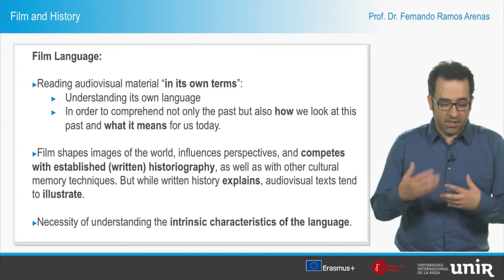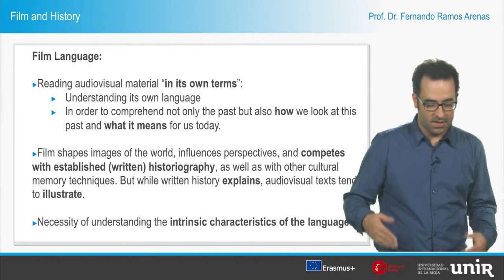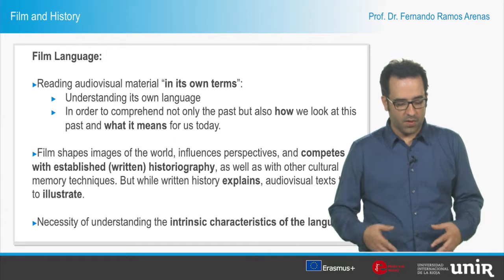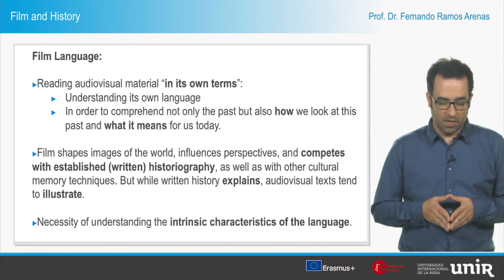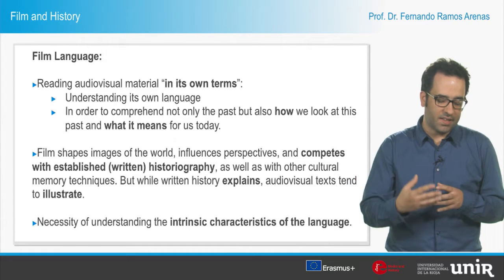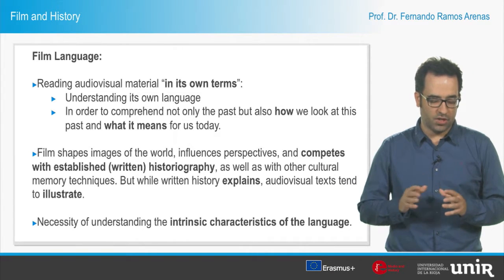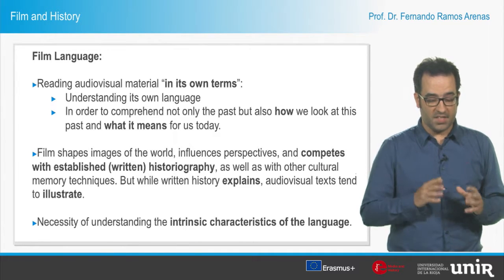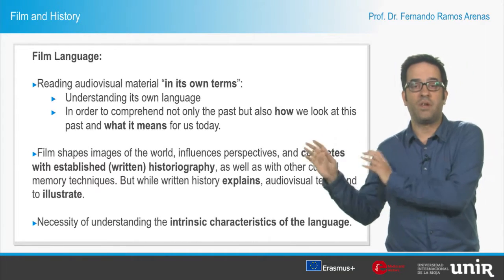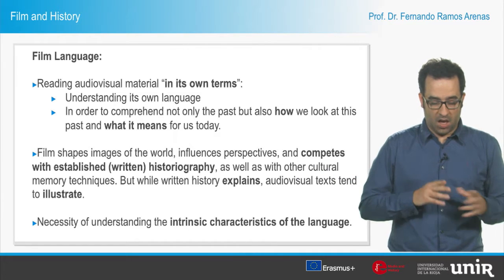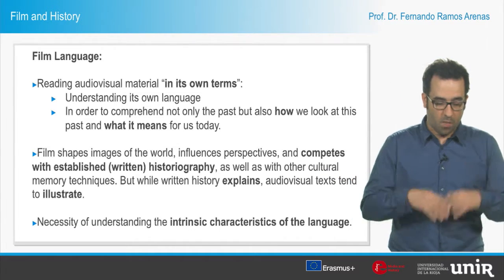While written history explains or tries to explain the past, audiovisual texts usually illustrate this past. So film functions as a way of aesthetically and narratively shaping the comprehension of history. It does not only translate a certain historical narrative — coming mainly from books — into images. It's more complex: it conveys historical understanding in audiovisual form.